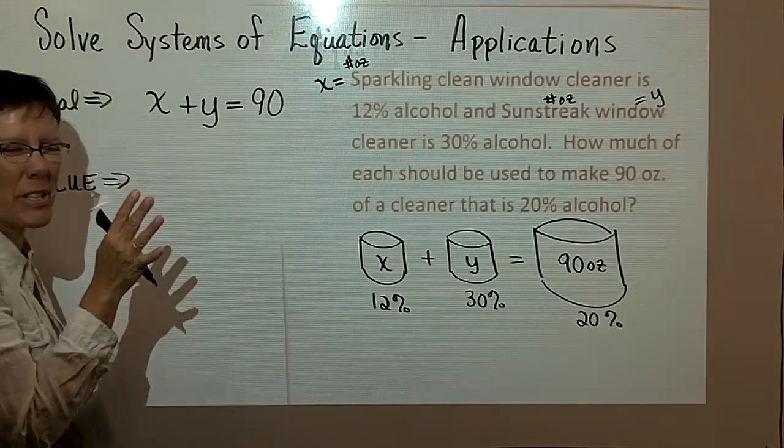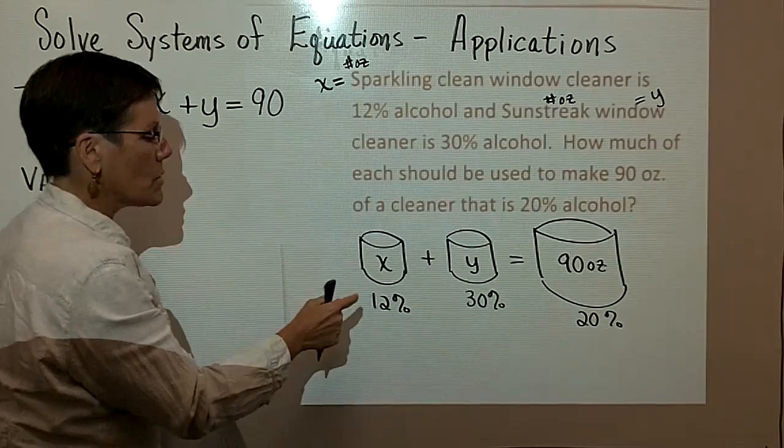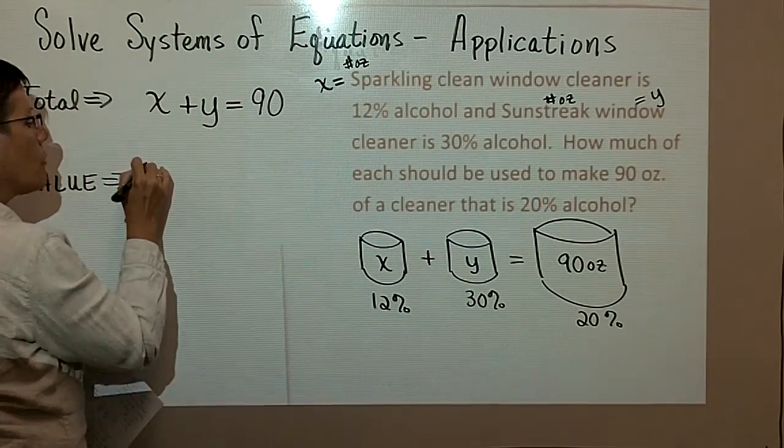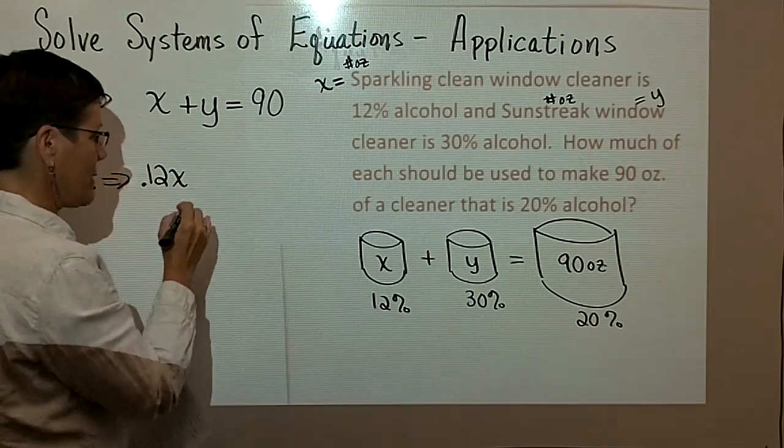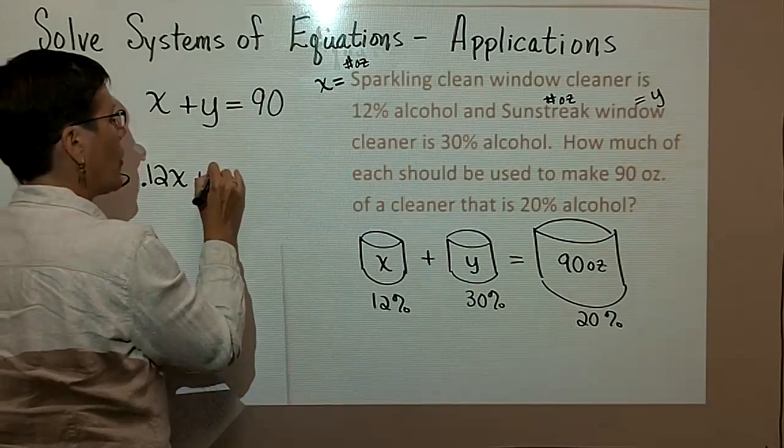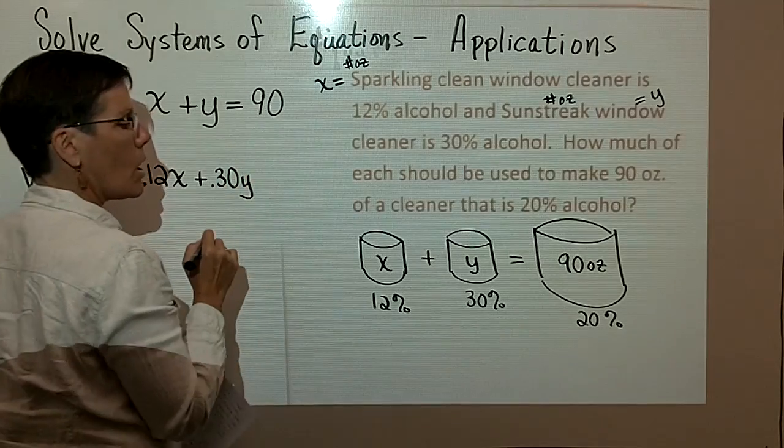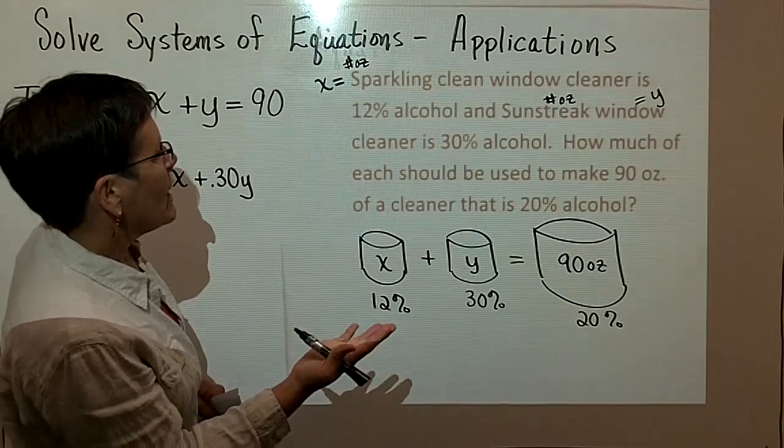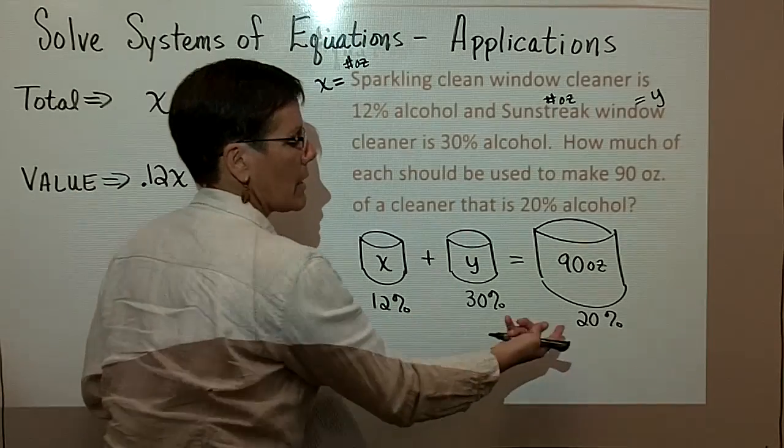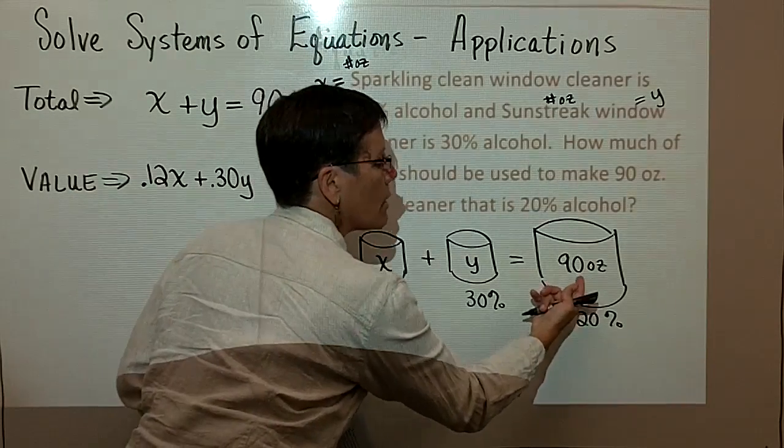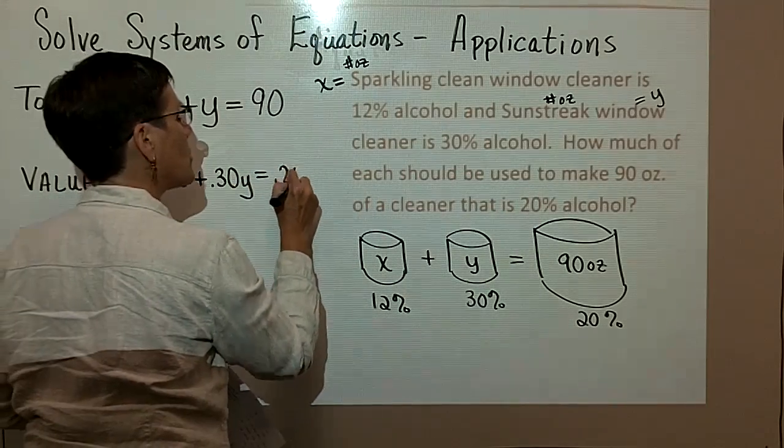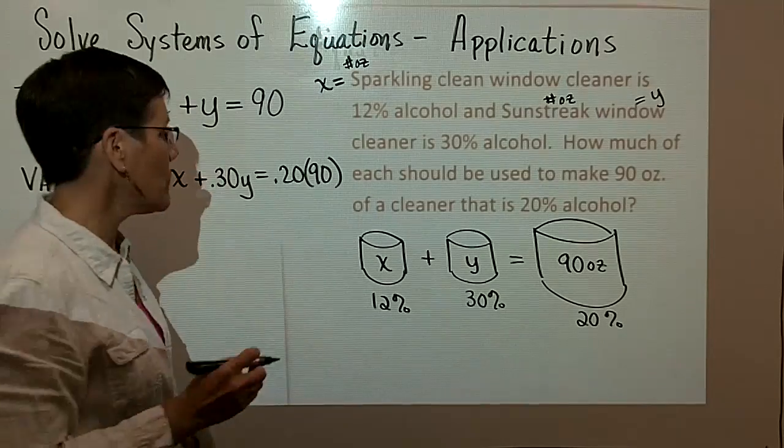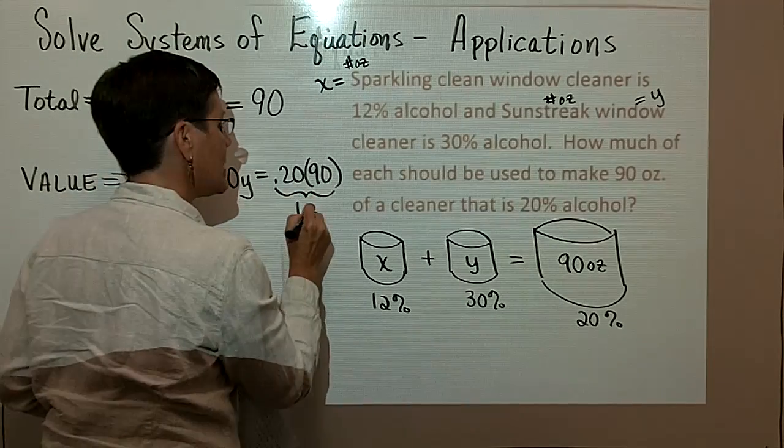What I'm calling the value statement isn't really a value statement. What I'm going to do is pull the percentages out of these buckets. So I'm going to pull 12% out of the bucket called X and 30% out of the bucket called Y. And if I'm pulling the pure alcohol out of these buckets, then I have to pull the 20% of the 90.